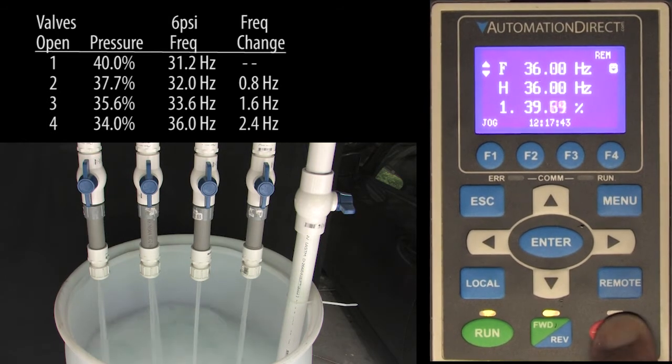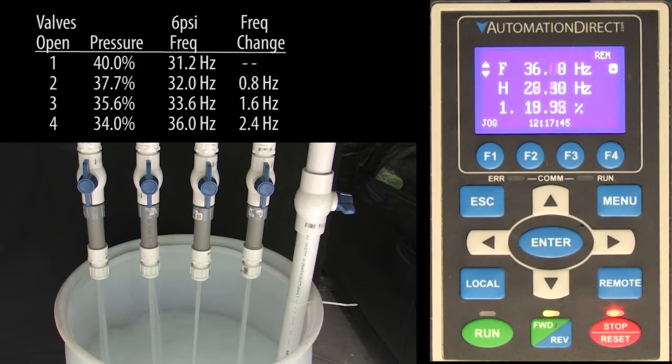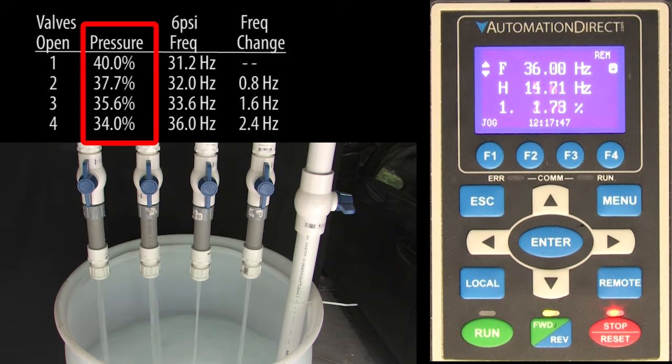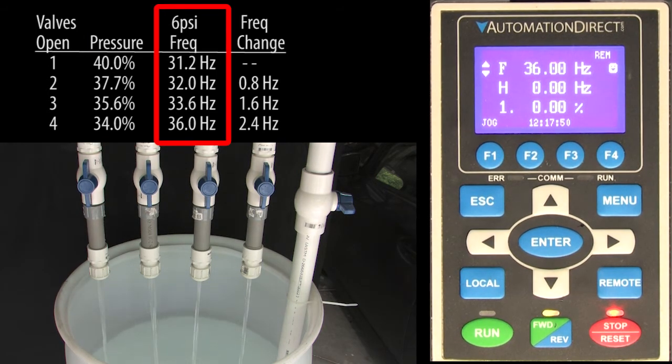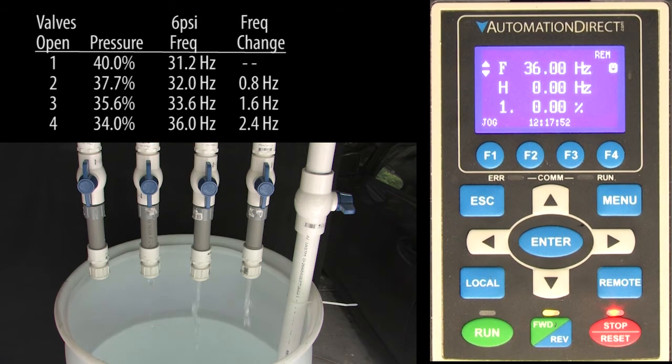So we just manually did what we want the drive to do automatically, right? Every time the pressure dropped, we manually added more drive frequency to compensate. Well, that's exactly what we want the drive's PID function to do for us.